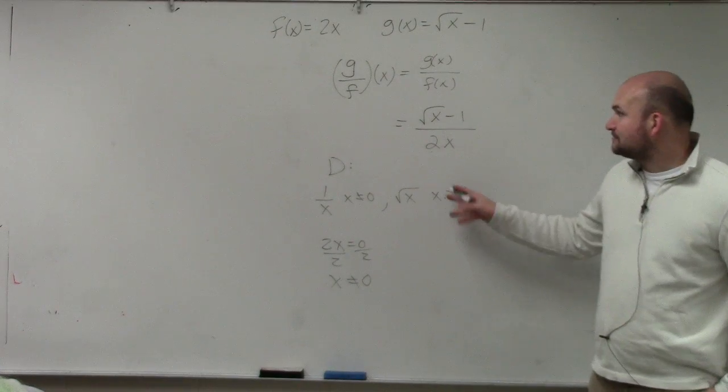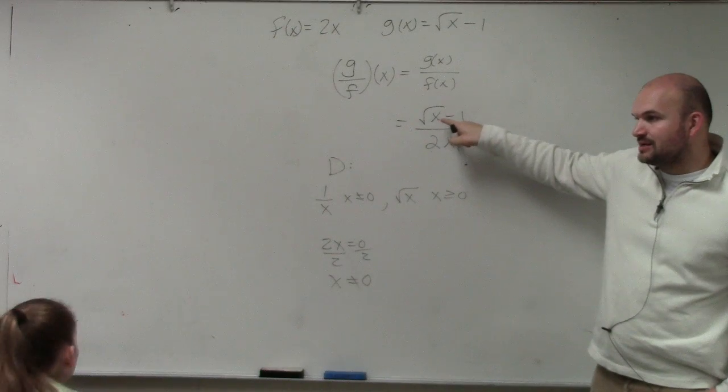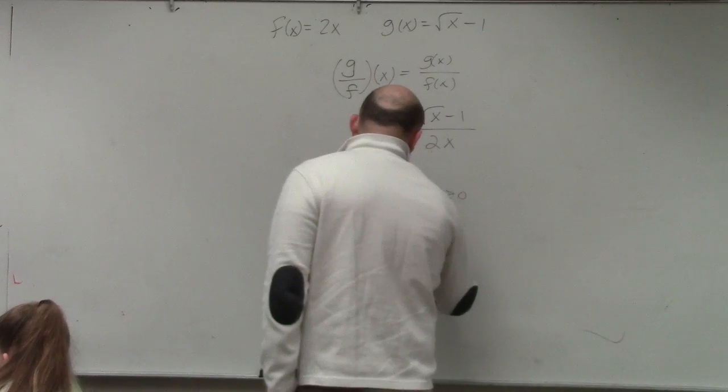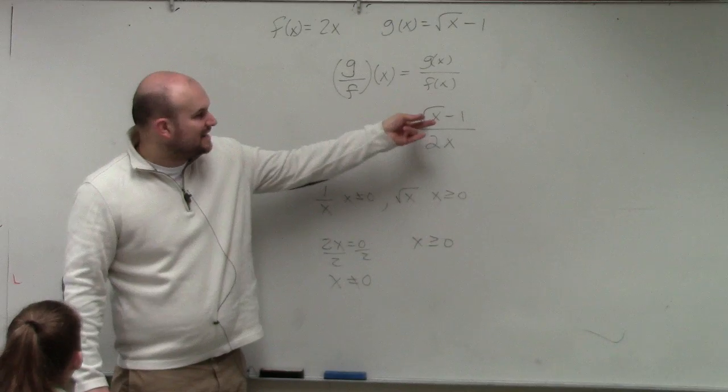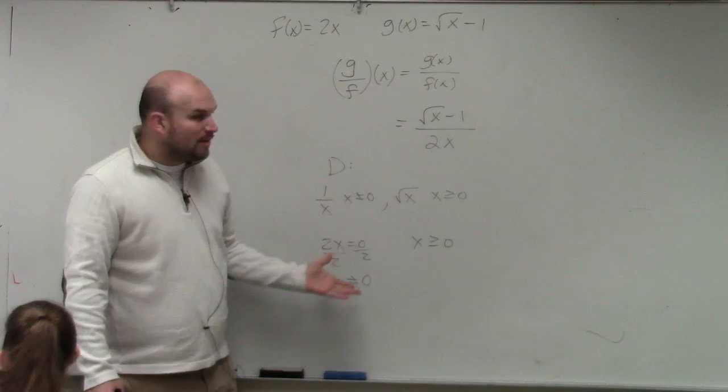Now let's do this one. So what is my radicand? What is under my radical? Just x, right? So x has to be greater than or equal to 0. Well, I don't even actually have to solve that. It's already given to me. It's just x. If it was like x plus 1, it'd probably be a little bit better to work with.